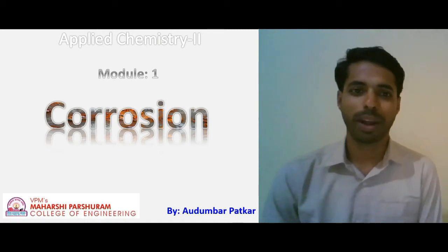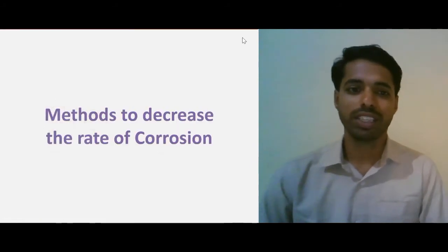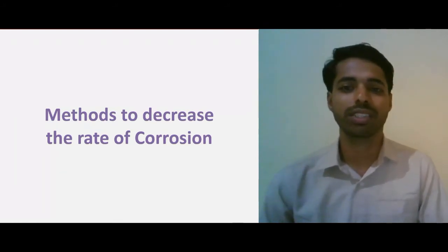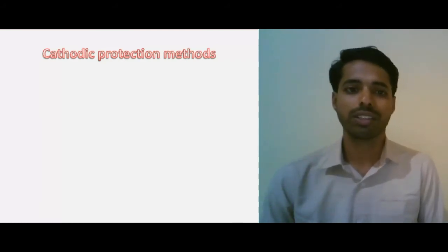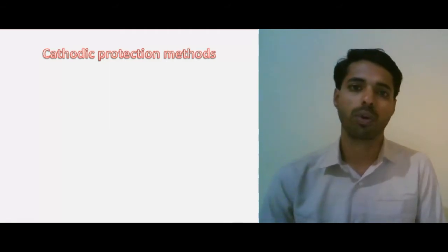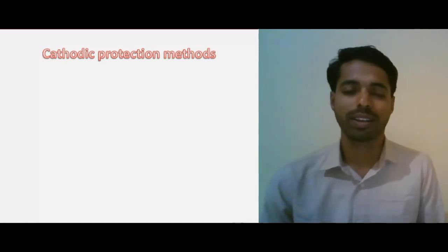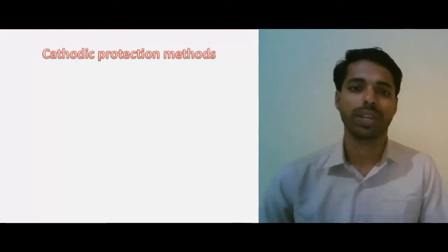Hi, I am Odhumbar Patkar and welcome to this lecture on the module corrosion. In this lecture we are going to talk about some important methods to decrease the rate of corrosion. Let's start with cathodic protection methods. Under this cathodic protection method we are going to talk about two important methods: one is the Sacrificial Anodic Protection Method and the other one is the Impressed Current Method.